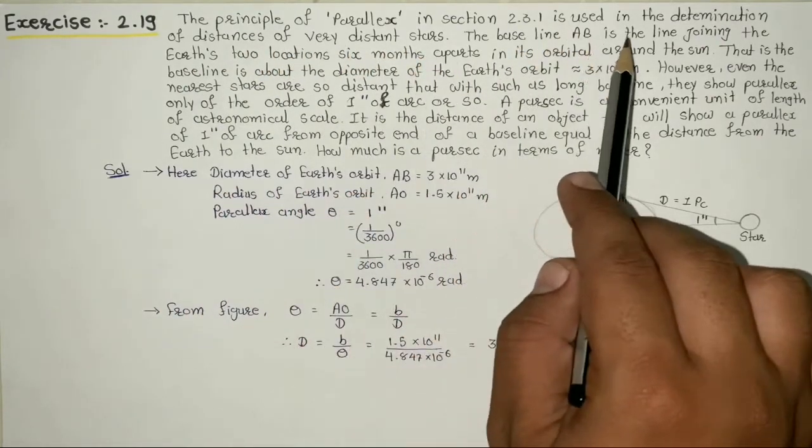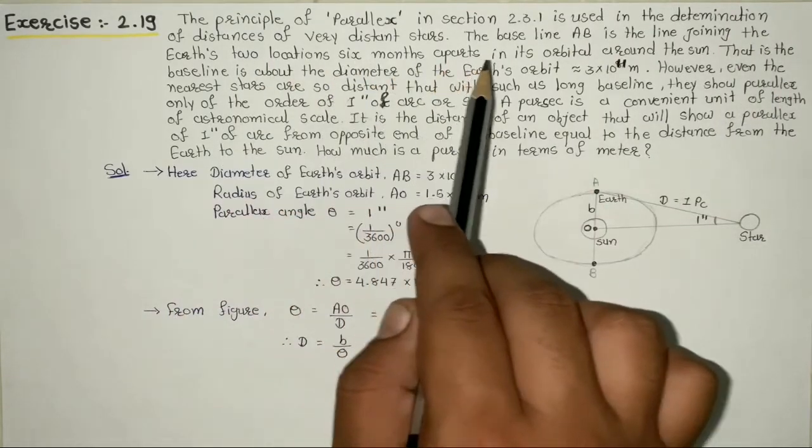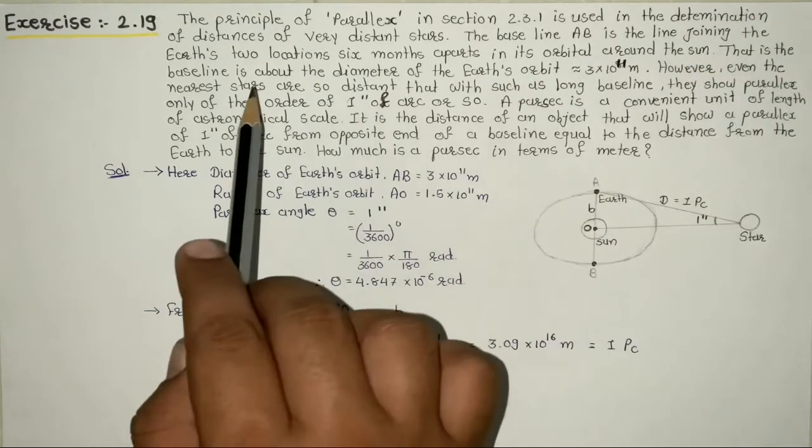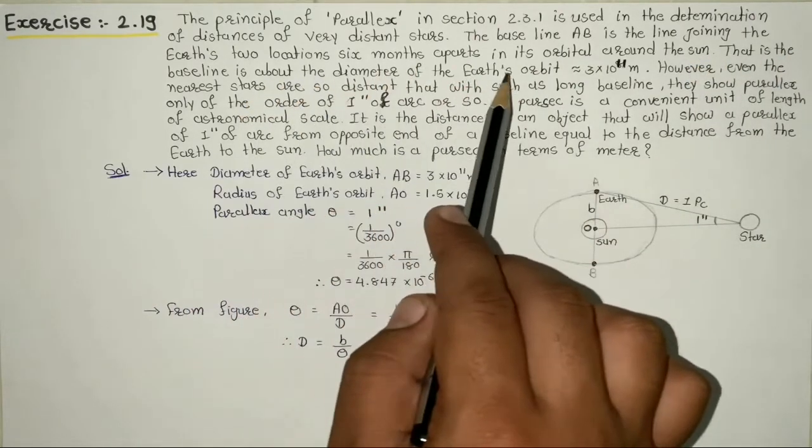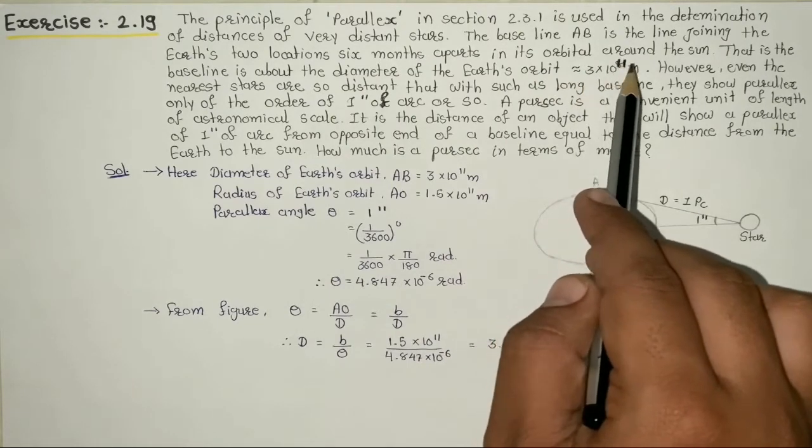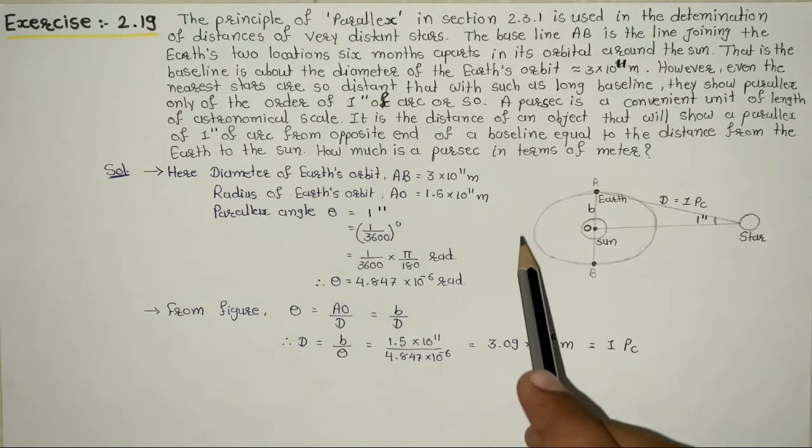The baseline AB is the line joining the Earth's two locations six months apart in its orbital around the Sun. That is, the baseline is about the diameter of the Earth's orbit, nearly equal to 3 times 10 to the power 11 meters. Here we have the Sun and the Earth's orbit drawn.